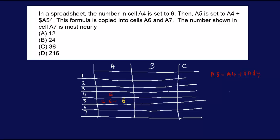So now this formula is copied into A6. What's A6? Because you go down from A5 to A6, there's no dollar sign here, so you would have A5.